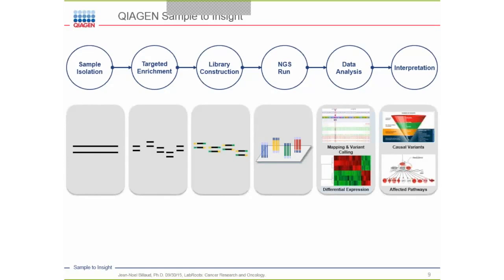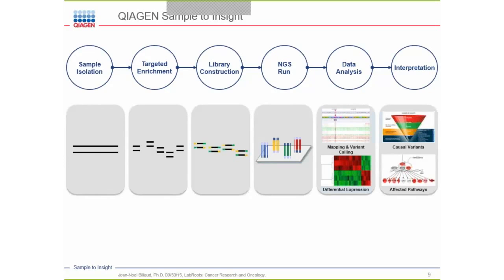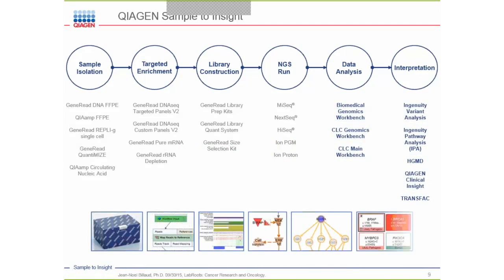What do we mean by Kaizen sample-to-insight? This is really the first time for biologists — and I am a biologist, not a bioinformatician — that we can, from sample isolation, extract RNA or DNA through target enrichment, library construction, and sequencing, then analyze the data for variants and mapping, look at differential expression, and finally interpret the biology, looking for causal variants as well as affected pathways. Kaizen has developed many useful kits allowing us to go through this entire workflow.